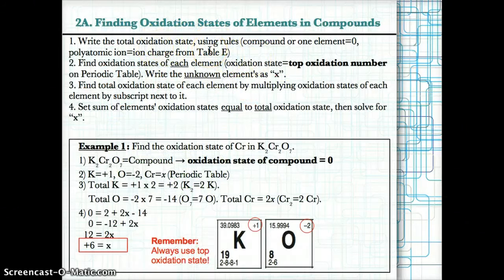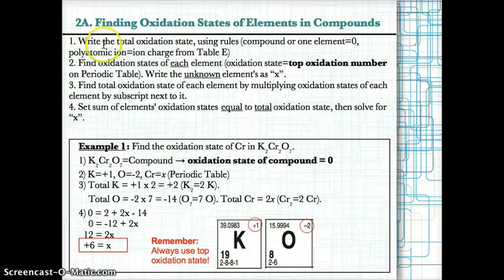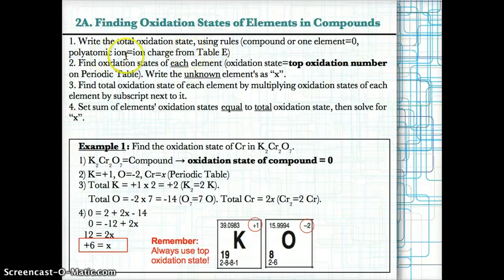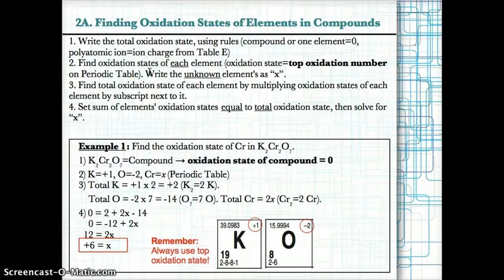Now let's talk about how to find oxidation states of elements, ions, and compounds using a four-step process. Step one: write the total oxidation state using the rules — zero for a compound or free element, or equal to the ion charge from table E for a polyatomic ion. Step two: find the oxidation states of each element using the top oxidation state in the periodic table element box. Any unknown element's oxidation state is written as X.